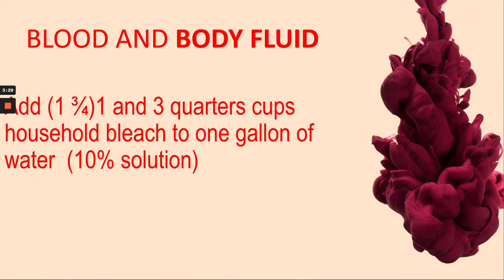Blood and body fluid — also referred to as your 10% bleach solution — add one and three quarter cups and soak for five minutes. The way to remember that is five minutes for blood and body fluid; five plus five is 10 for low level, and 10 plus 10 is 20 for high level.